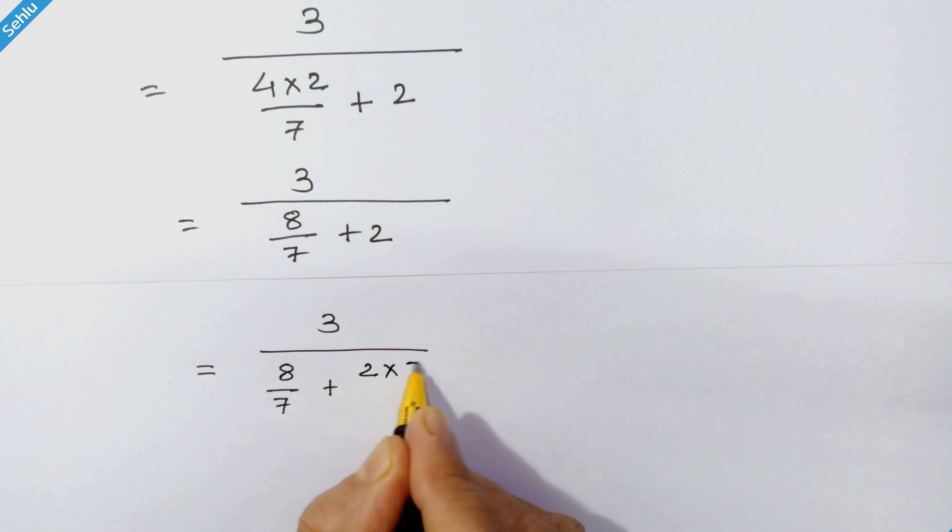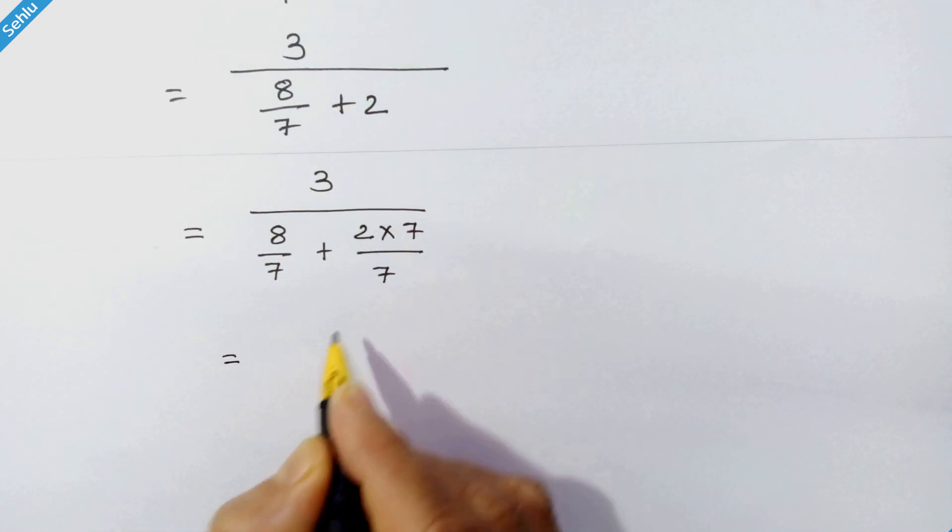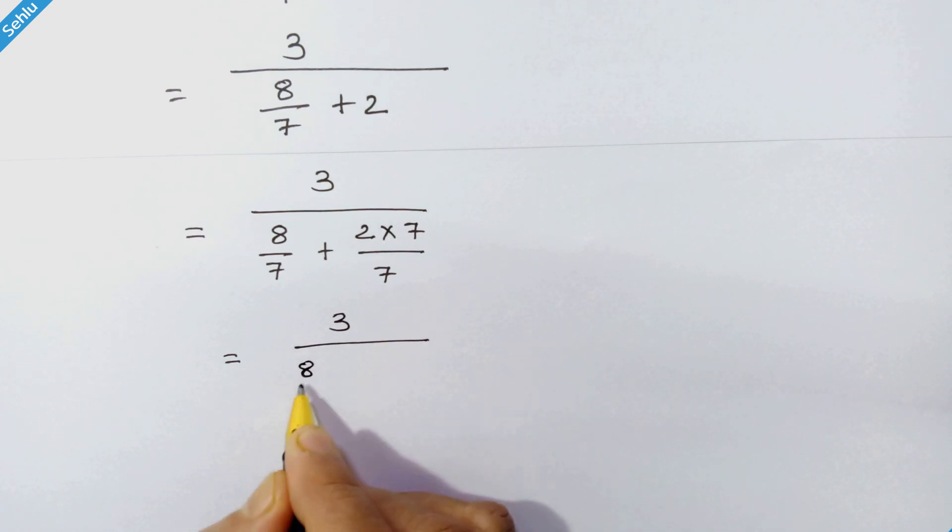So we have 2 times 7 upon 7, is equal to 3 upon 8 upon 7 plus 14 upon 7.